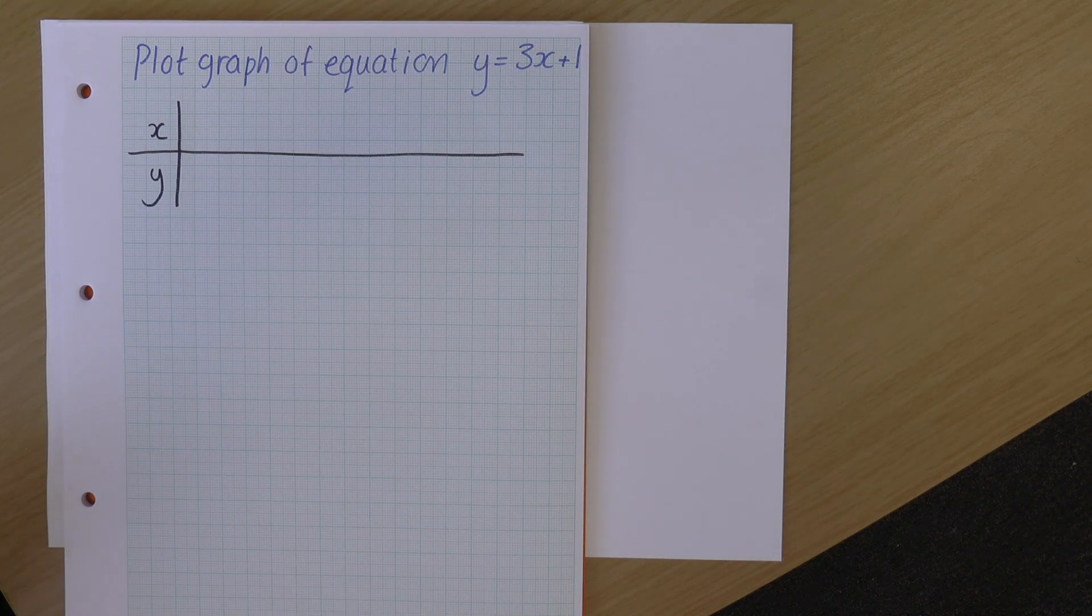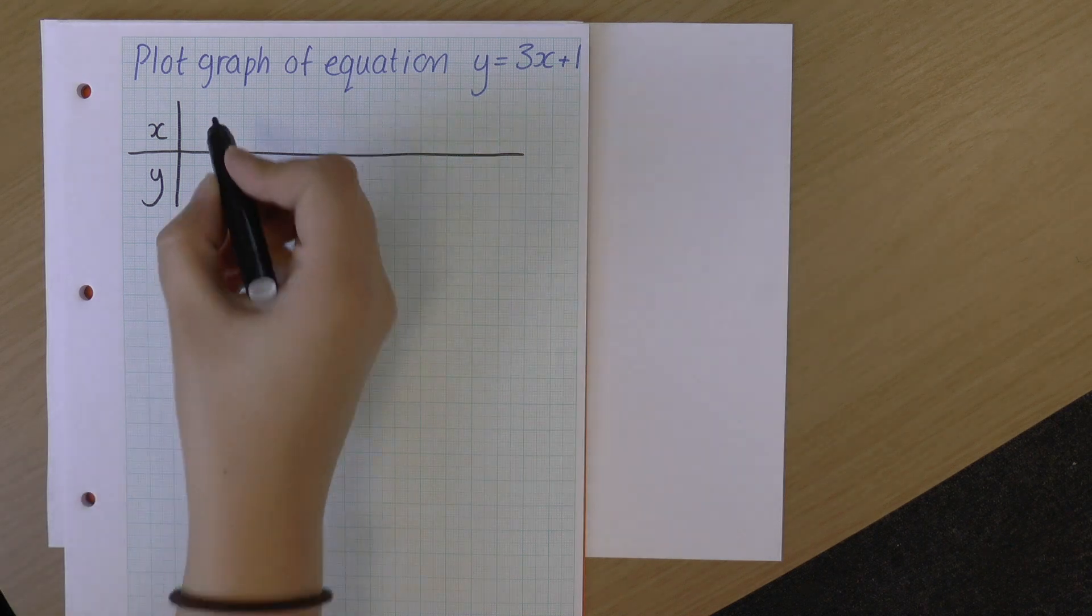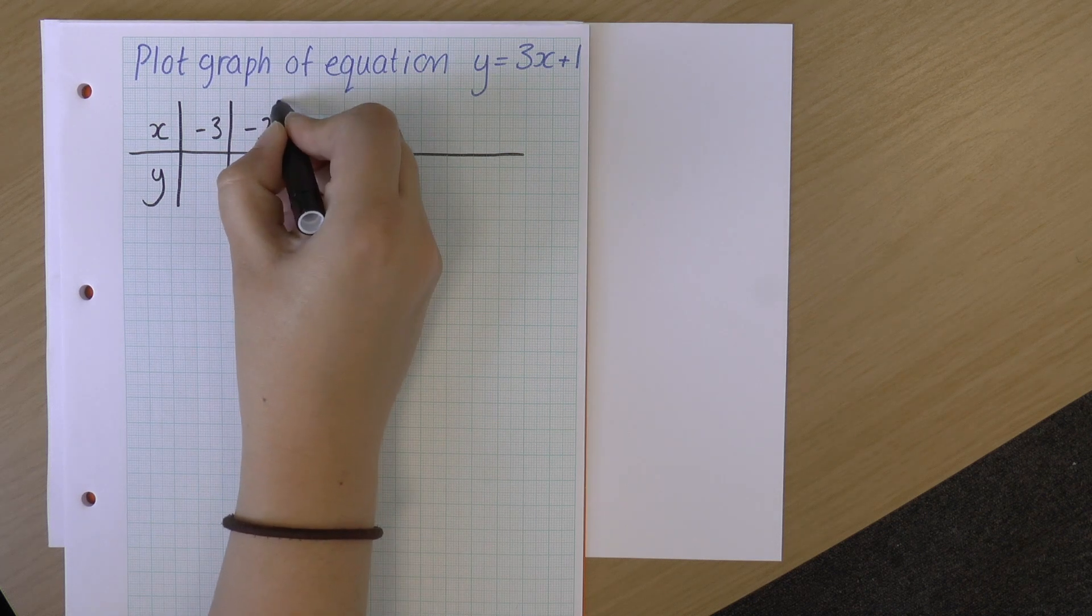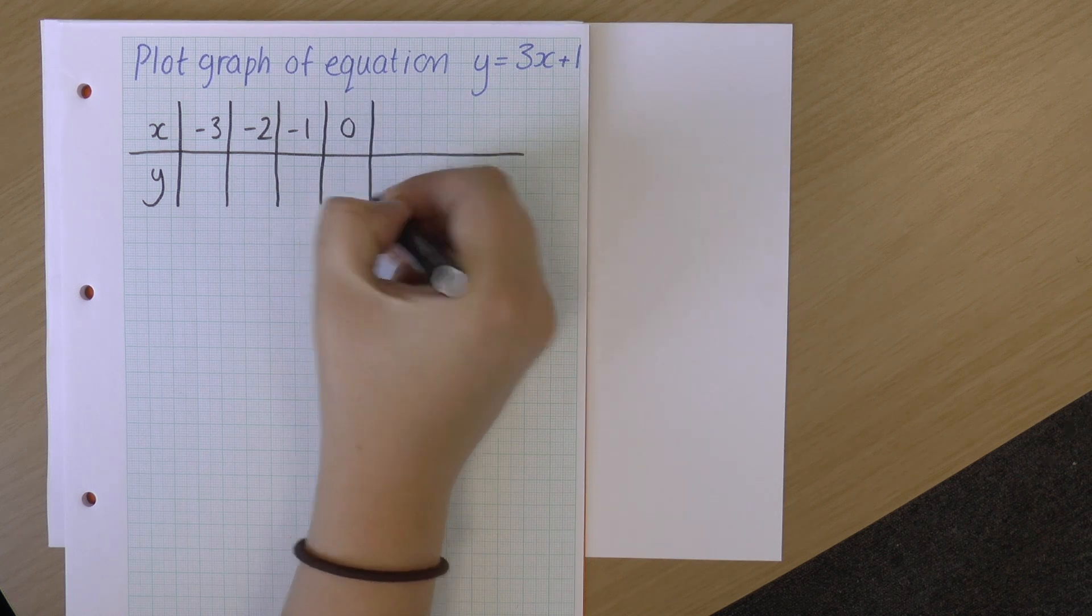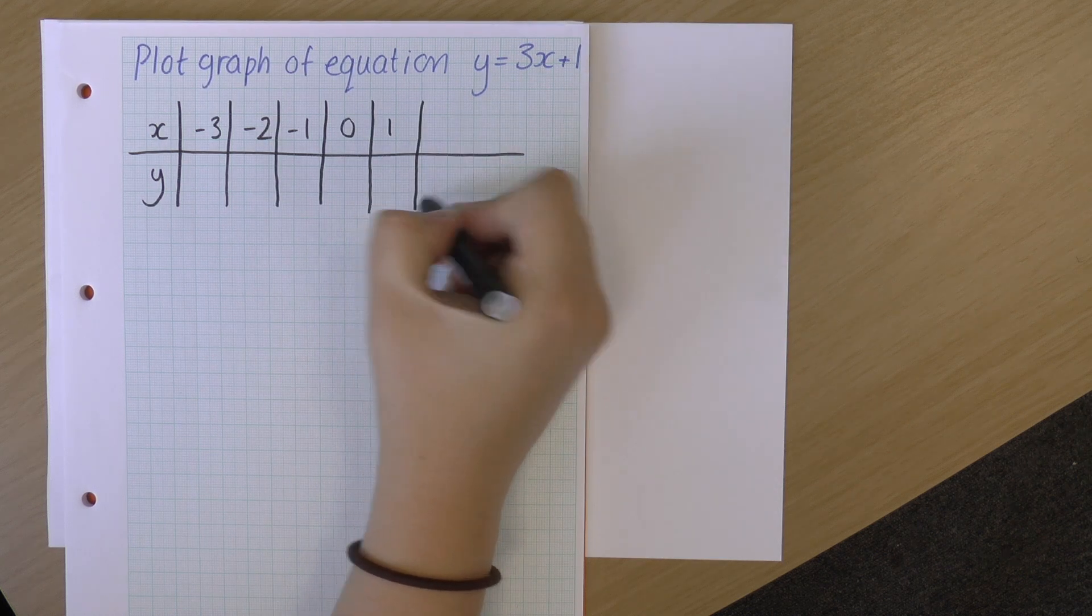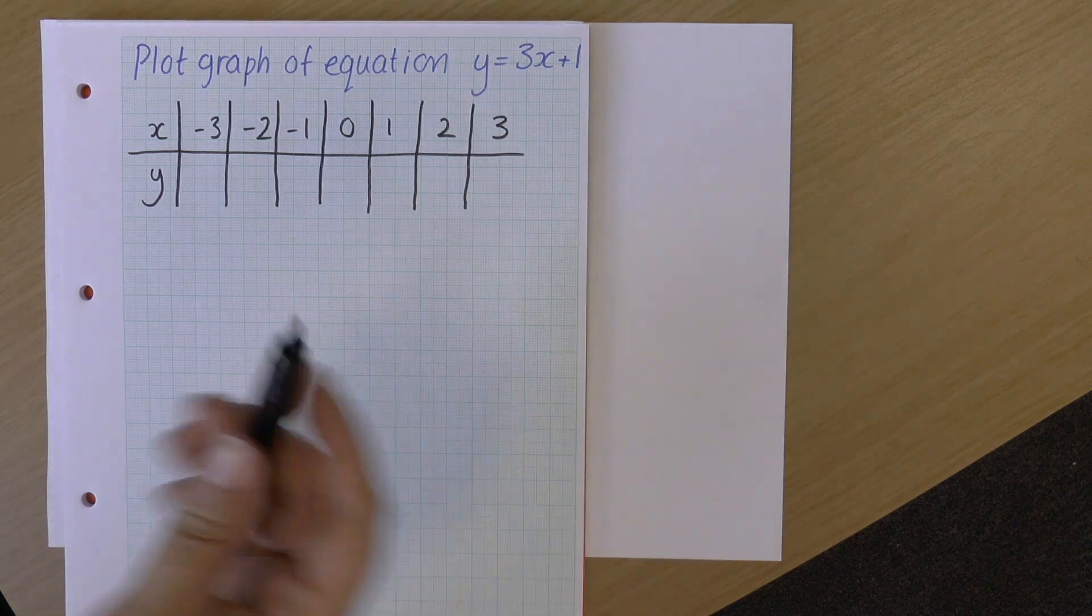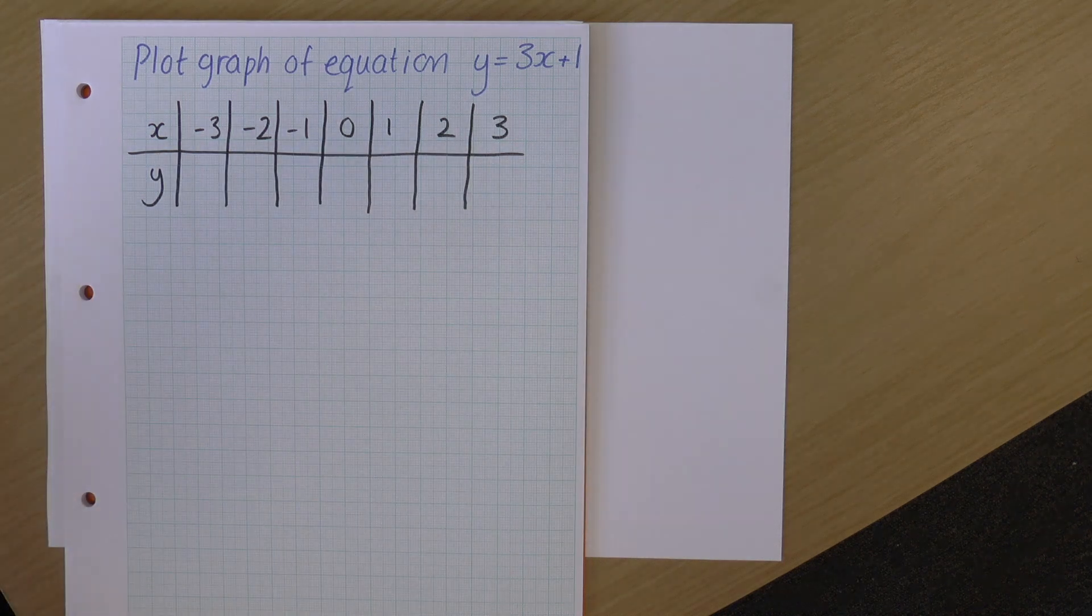And I get to choose what my x values are. So I always go with minus 3, minus 2, minus 1, 0, 1, 2, and 3. So I have chosen my x values, so these will be the values for my x axis.